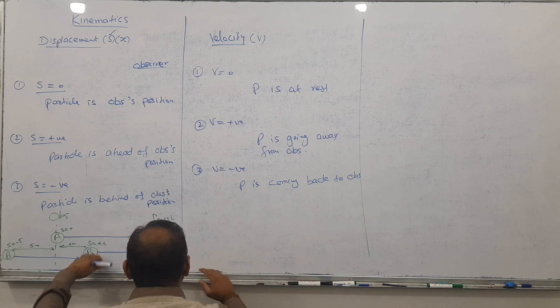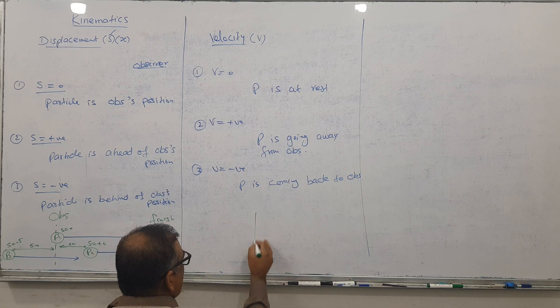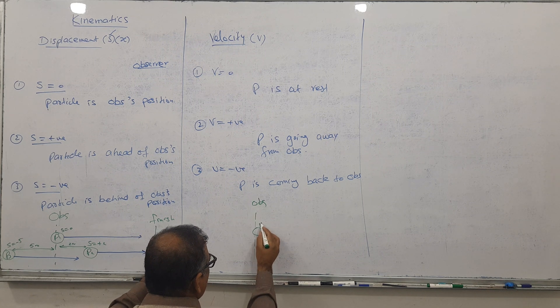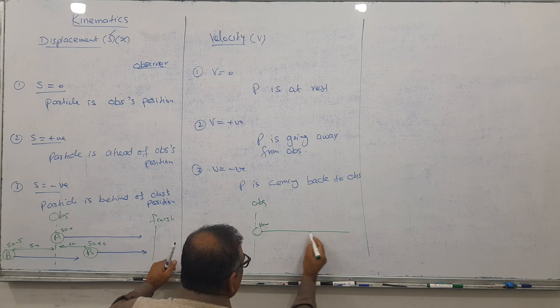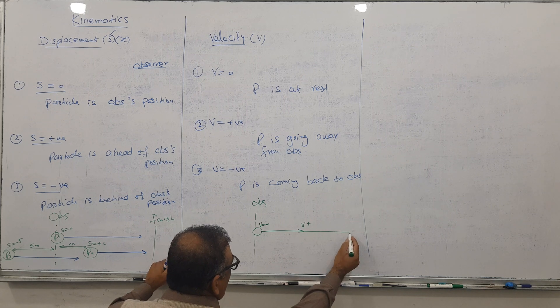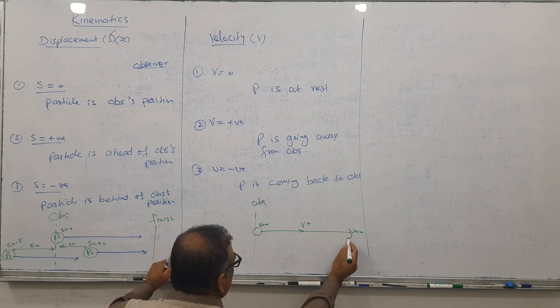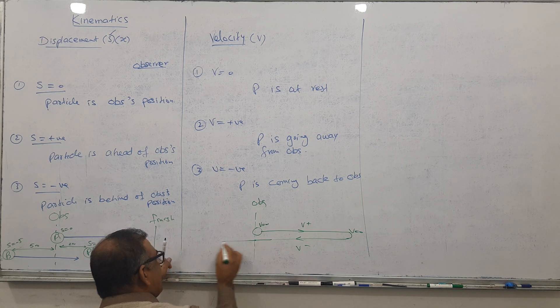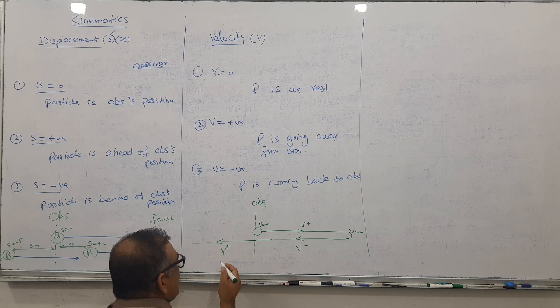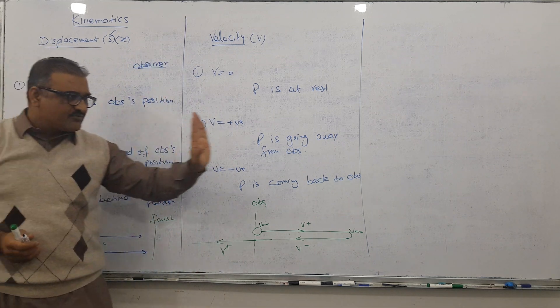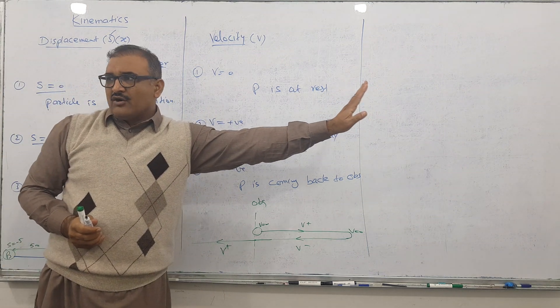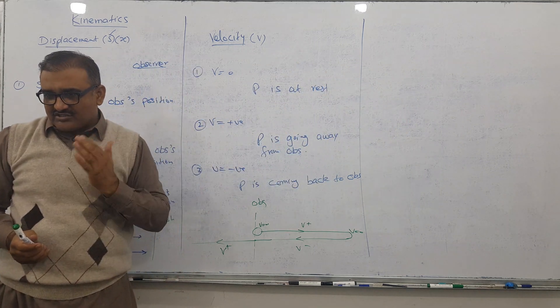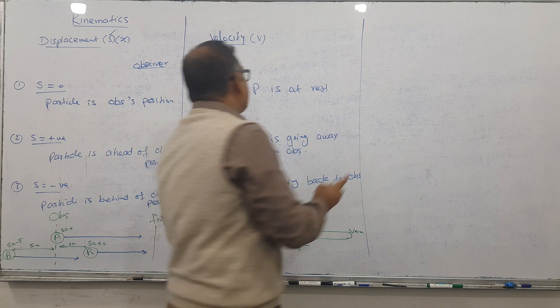For example, this is the observer's point. The particle starts at rest, then goes here, so v is positive. It stops here, v is zero. Coming back, v is negative. Suppose it never stops and continues, again v becomes positive. When the particle is going away from the observer, velocity is positive. It stops there, velocity is zero. Turn back, velocity is negative.